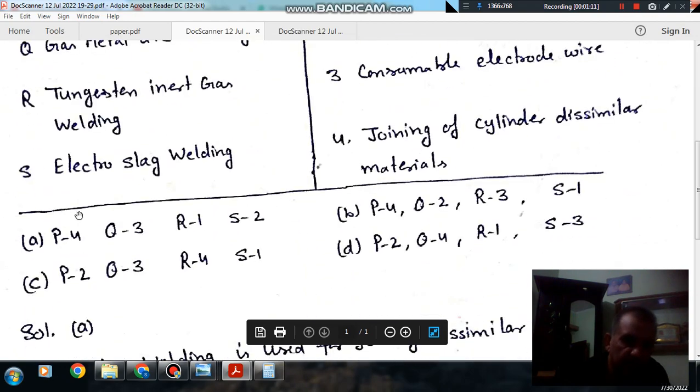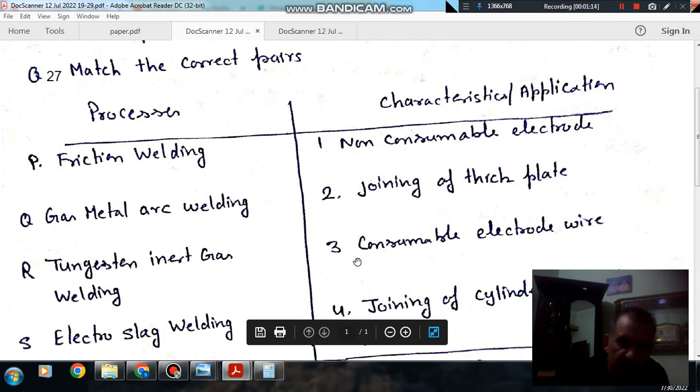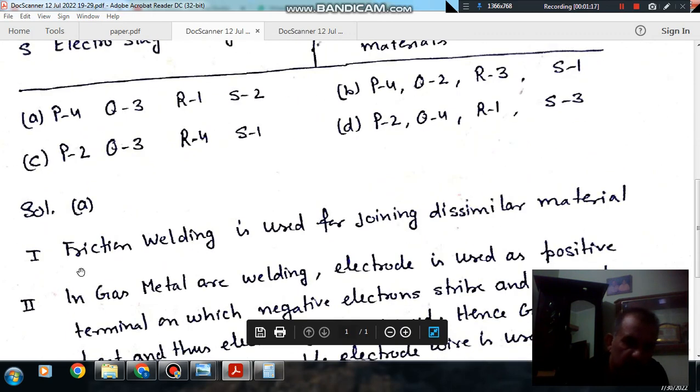So, answer is option A. P-4 means friction welding is used for joining dissimilar metal. So friction welding is used for joining dissimilar metal, that is correct.